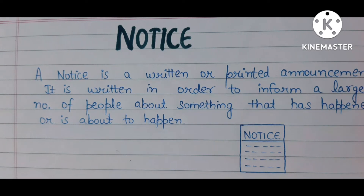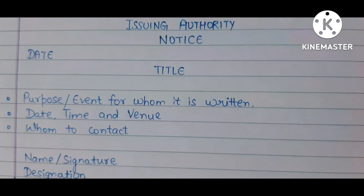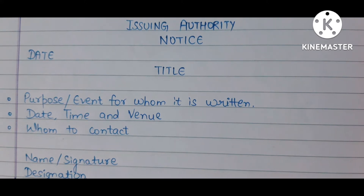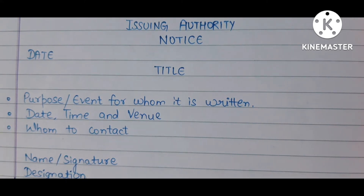A notice is always placed in a box and put on the notice board. Here comes the format of a notice. First of all, you have to write the issuing authority. You have to write 'NOTICE' in capital letters. You have to write a date and a title. In the title, you have to write the topic — you will tell what you are writing about and what the event is.